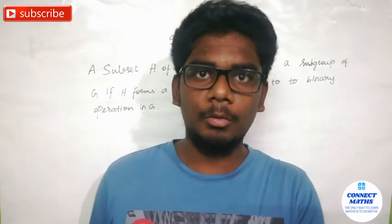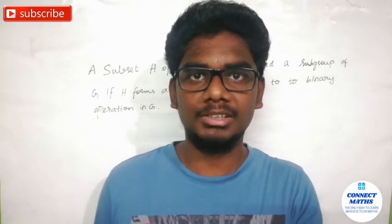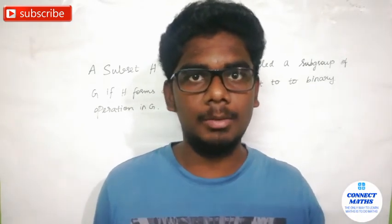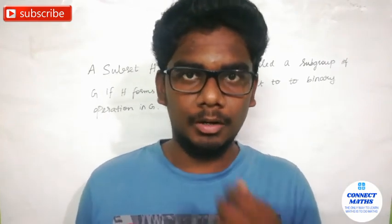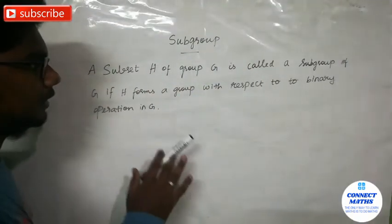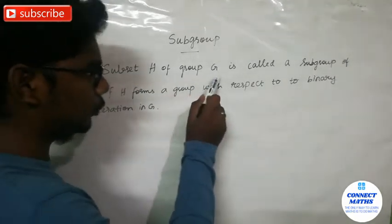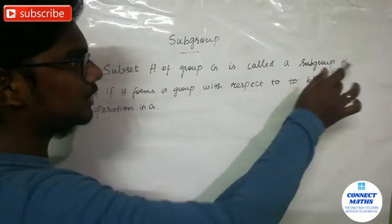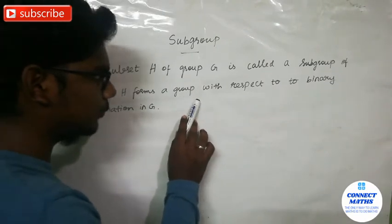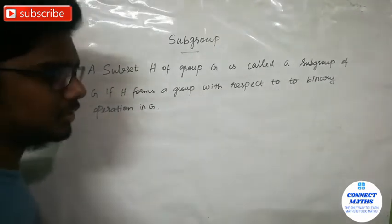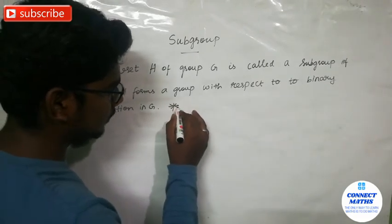The commutative property is the fifth property — if the set satisfies this, it forms a group. Now we will look at the definition of subgroup. A subset H of a group G is called a subgroup of G if H forms a group with respect to the binary operation of G, denoted by star.